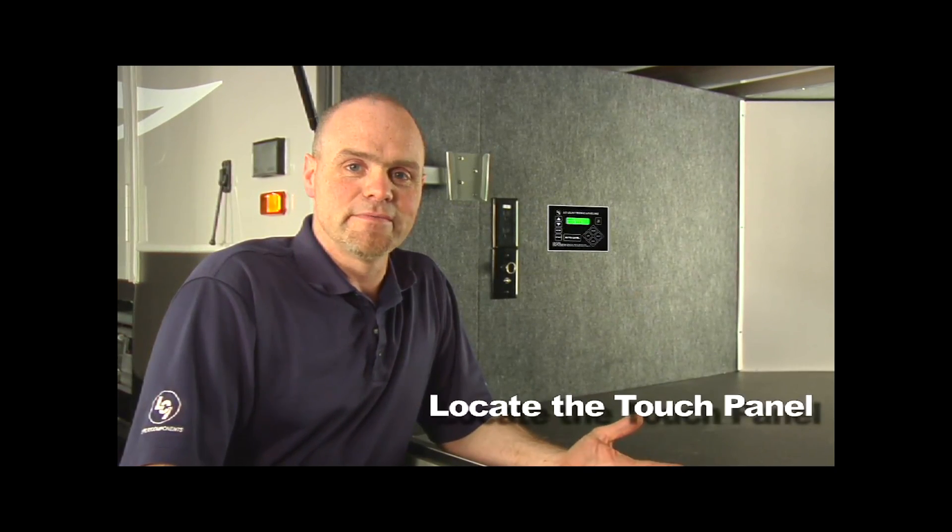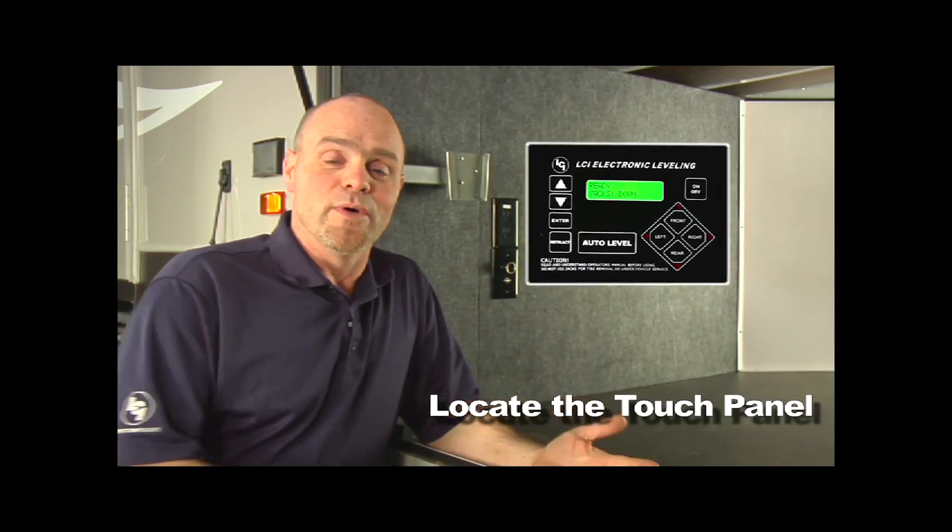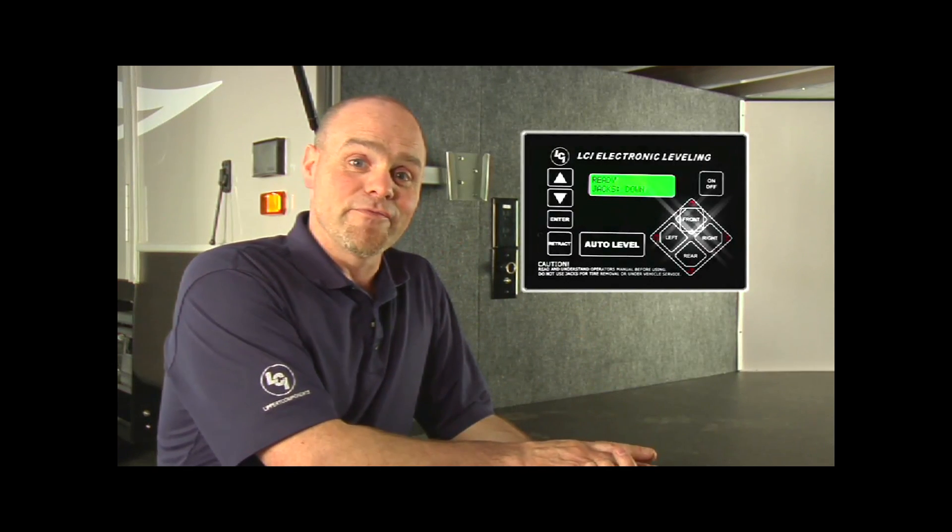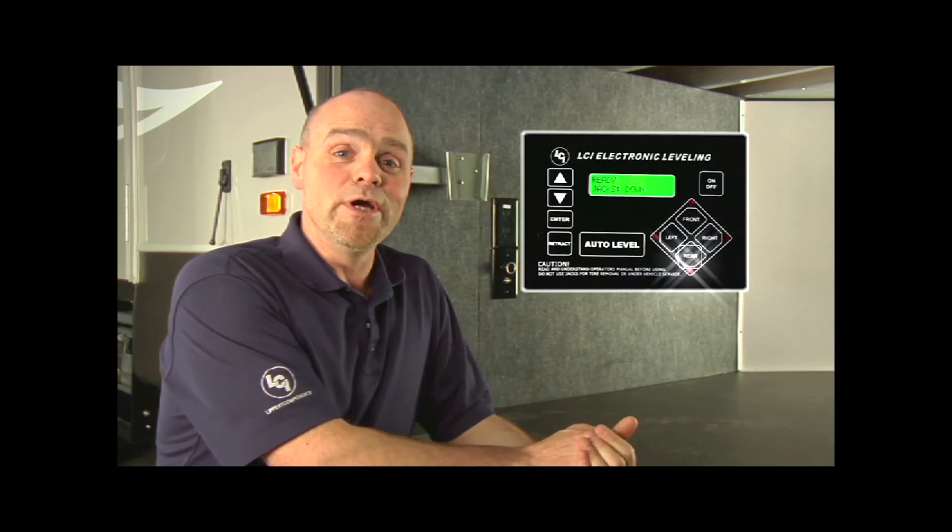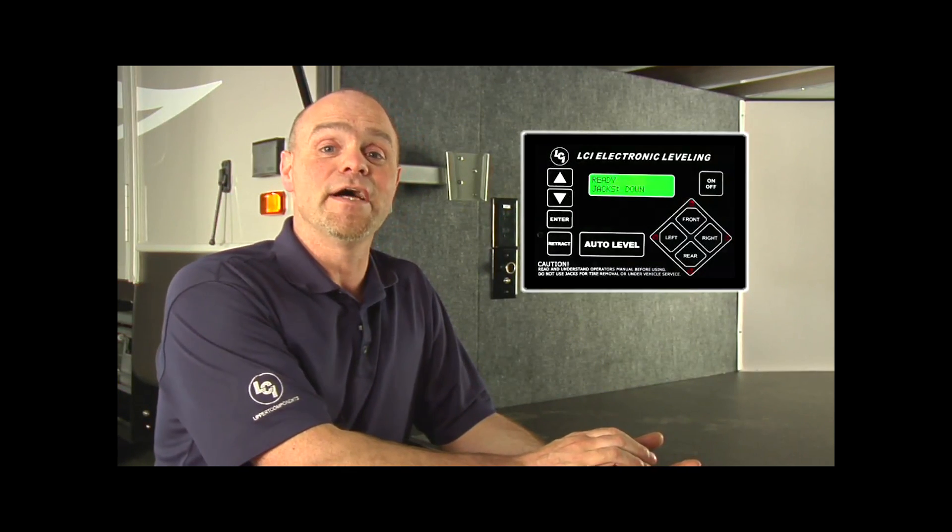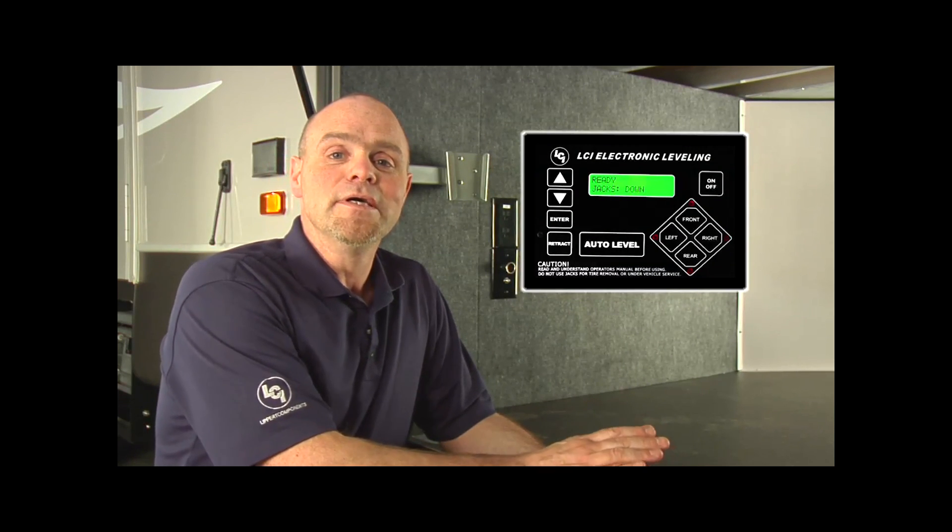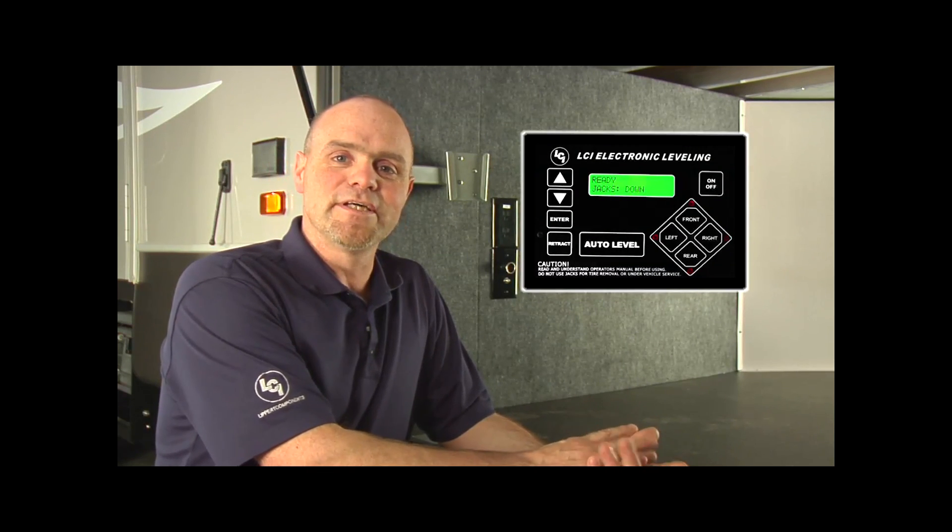First, we need to locate our touch panel. In the instance of this coach, it happens to be on the inside here. That touch pad has an on, a front, a left, a right, a rear, and a retract button. It has scrolling where you can go through and find your angle, find your battery voltage, and go to a retract mode. This touch panel can tell you a lot about that system and how it's working.